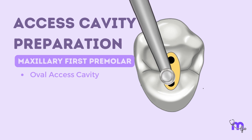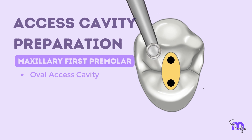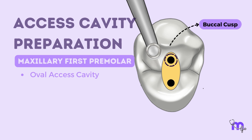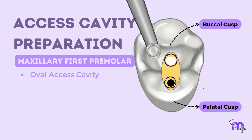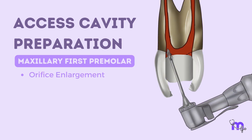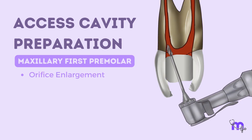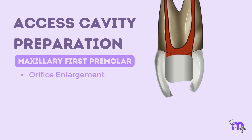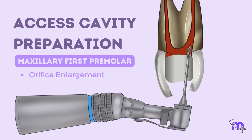This revealed two orifices: one under the buccal cusp and the other under the palatal cusp. I located the larger palatal canal before the buccal canal, and then enlarged the orifices with a GG drill.